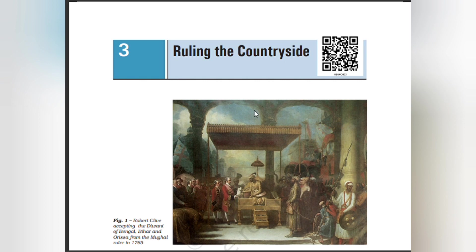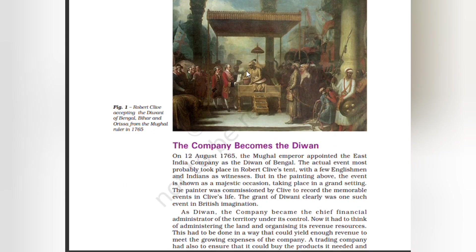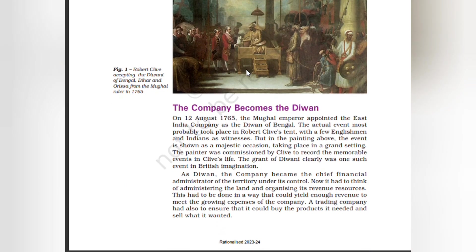Hello, my dear students. Welcome to Teacher at Home. Today's class, we are going to learn the third chapter: Ruling the Countryside. The company becomes the Divan. On 12th August 1765, the Mughal Emperor appointed the East India Company as the Divan of Bengal.